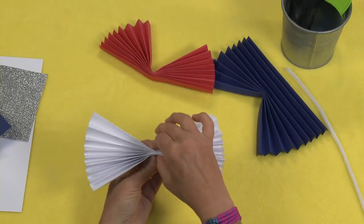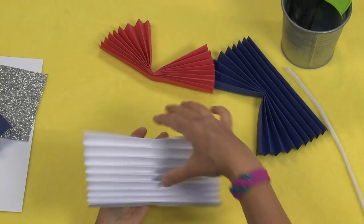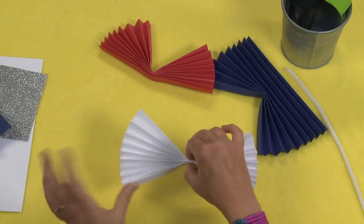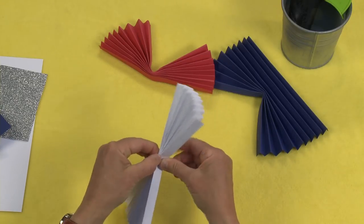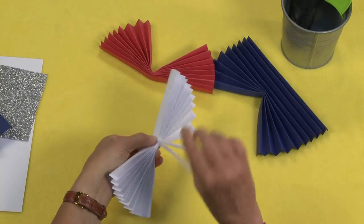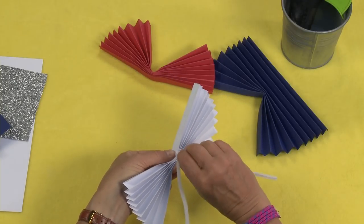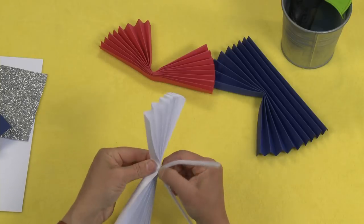Take your white one and turn it into a bow tie by just pinching it straight down in the center. And then take your pipe cleaner and wrap it around, take it to the back, and just give it a little twist. Like that.